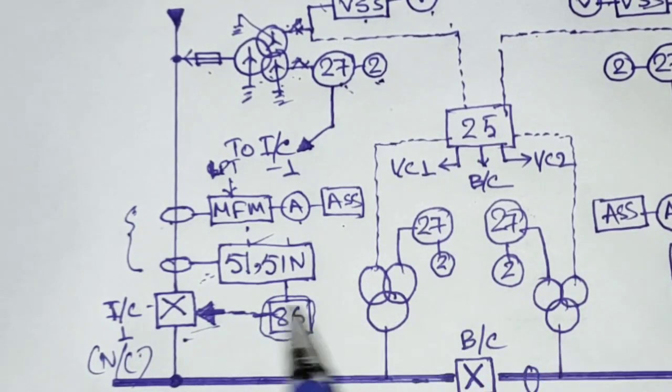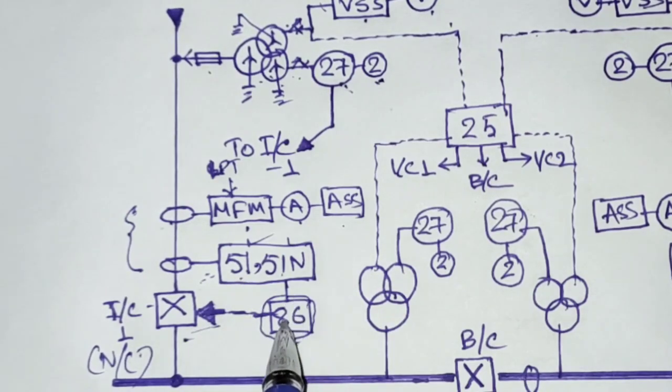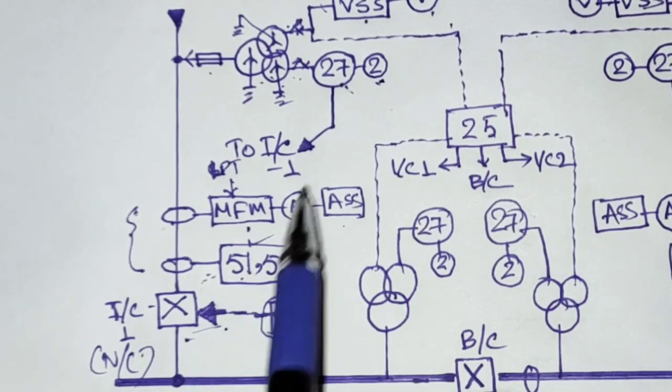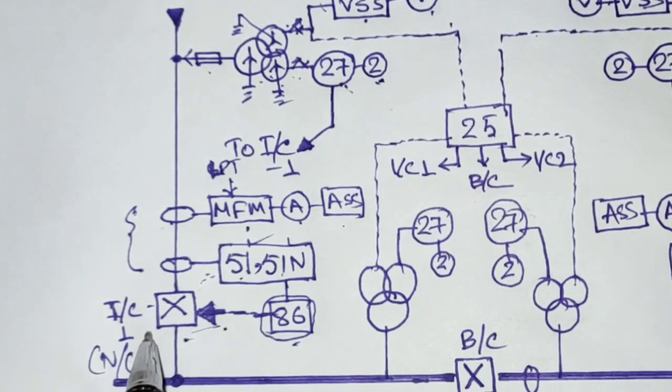This 27 doesn't come through the 86. Here is the actual trick. The 51 and 51N feed through the 86 but the 27 is directly fed to the breaker directly.